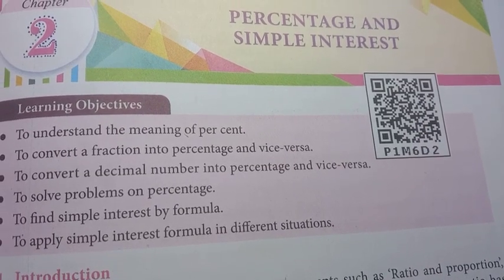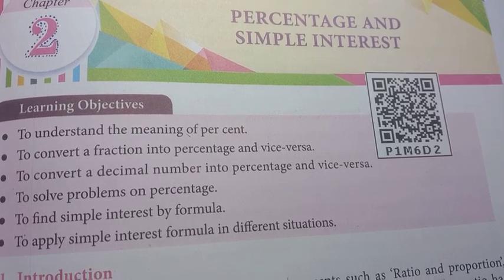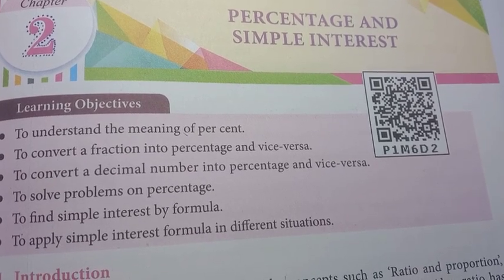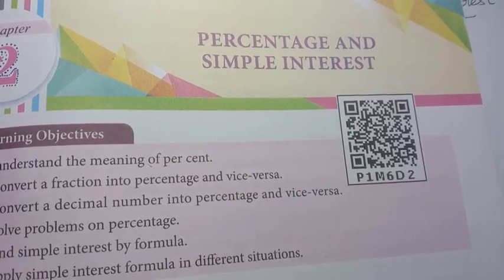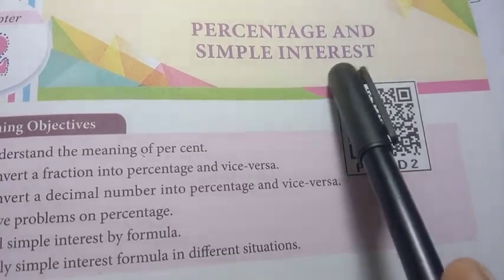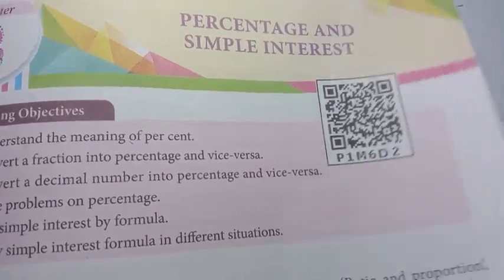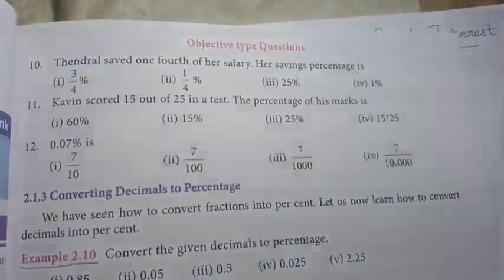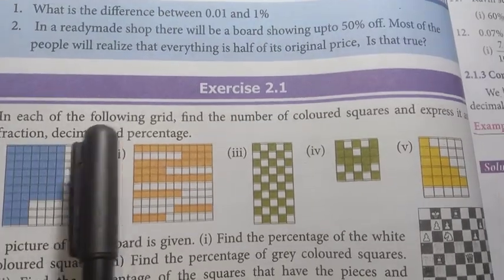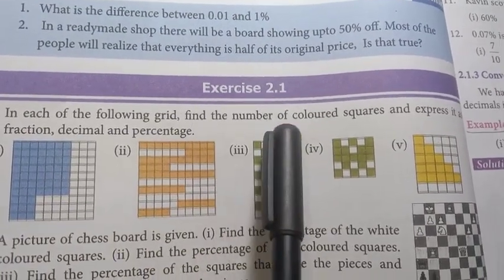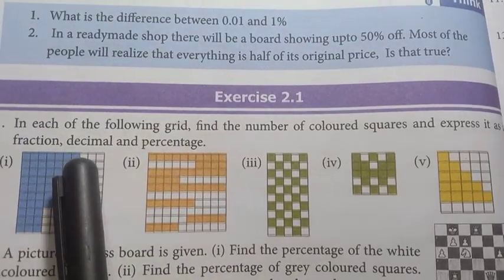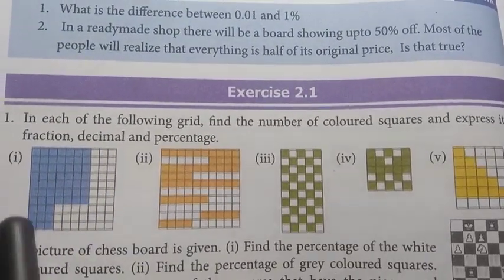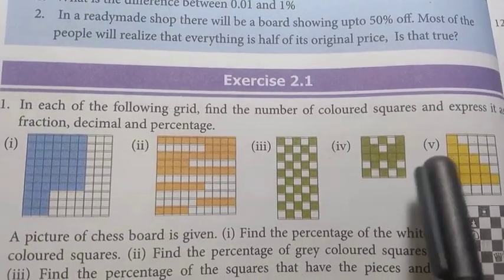Greetings everyone, welcome to our channel Student Station. In this video we cover 7th standard, Term 3, Chapter 2: Percentage and Simple Interest, book back exercise 2.1. In each of the following grids, find the number of colored squares and express it as a fraction, decimal, and percentage. We have five grids.